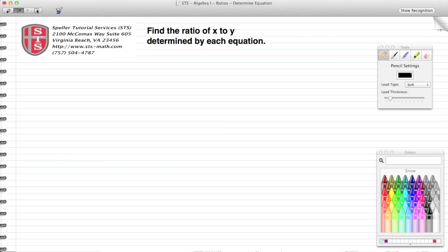Welcome back to Speller Tutorial Services. Today we're going to continue our talk on ratios. In today's lesson, we're going to find the ratio of x to y determined by each equation, and we're going to take a look at two examples. Let's take a look at this one here first.